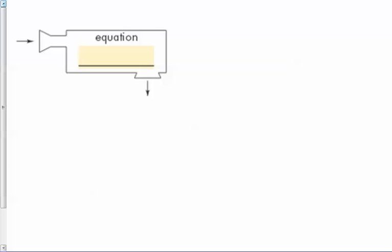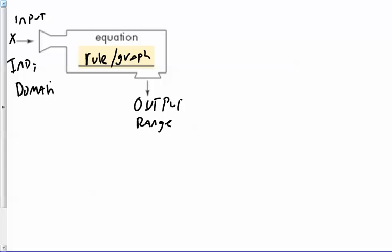Dependent variable is the output, independent variable is the input. Just be mindful that this X is input, X is the independent variable, X is the domain. The equation is the rule, it can also be the graph. This is your output, this is your range, this is your dependent variable. We talked about this not too long ago, but just in case you forgot.